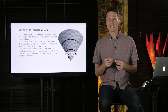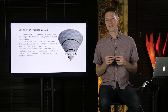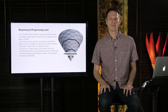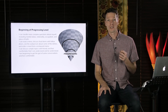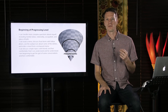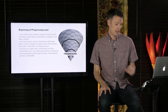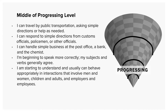After a little more time, their ability will have grown further and they will be able to participate in more complicated exchanges. They will be showing improvement in using correct basic grammar constructions and more understanding of some common cultural traditions and taboos. They might describe their ability like this: I can travel by public transportation, asking simple directions or help as needed. I can respond to simple directions from customs officers, policemen, and other officials. I can handle simple business at the post office, a bank, and the chemist or pharmacy. I am beginning to speak more correctly — my subjects and verbs generally agree. I am starting to understand and usually can behave appropriately in interactions involving men and women, children and adults, and employers and employees.